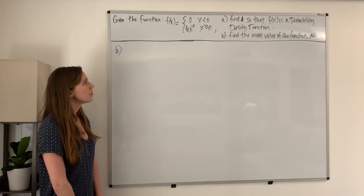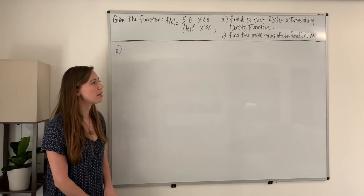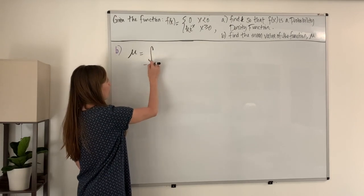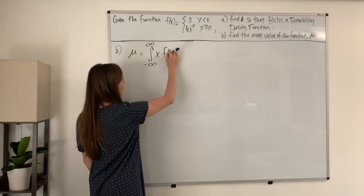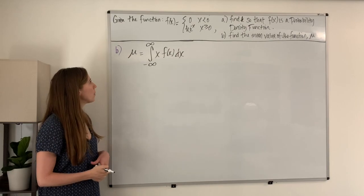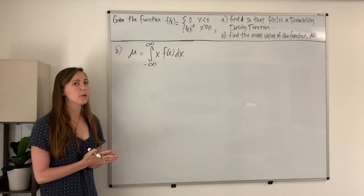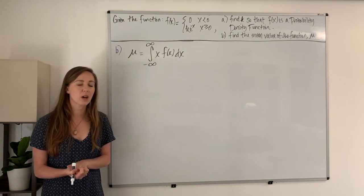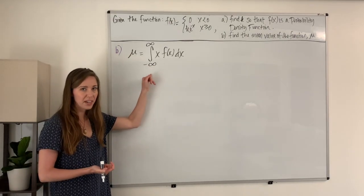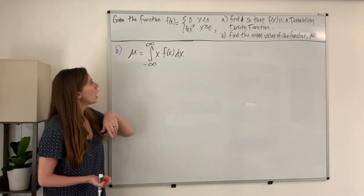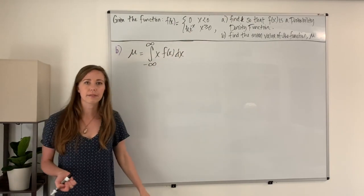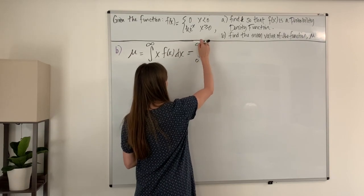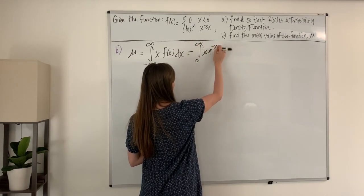For the second part of this problem, we want to find the mean value of the function, which is mu. We use the fact that mu equals the integral from negative infinity to infinity of x times f of x dx. Again, since our function is piecewise and only exists for values of x from zero to positive infinity, we rewrite this as the integral from zero to positive infinity. Our f of x is just e to the negative x, since we found k equals one. So we have mu equals the integral from zero to infinity of x times e to the negative x dx.